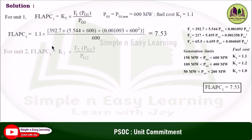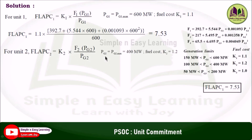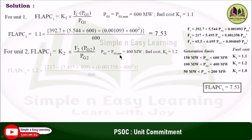Similarly, for unit 2: FLAPC_2 is equal to K2 multiplied by F2(PG2) divided by PG2, where PG2 max is equal to 400 and the fuel cost K2 is equal to 1.2. Substituting these values, you get 7.896.